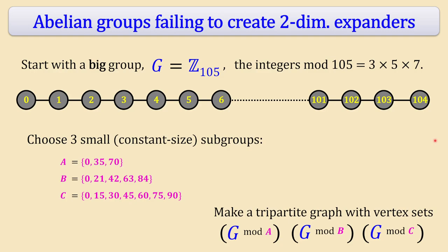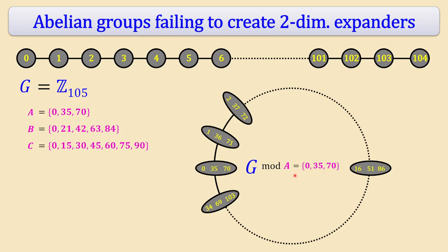From this, build a tripartite graph: vertex set 1 is G mod A (35 vertices), vertex set 2 is G mod B (21 vertices), vertex set 3 is G mod C (15 vertices). Each vertex in G mod A represents a coset — for example, one vertex stands for the numbers congruent to some value mod 35. The dashed circles in the picture are just for illustration; there are no edges within each part since it's a tripartite graph.